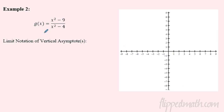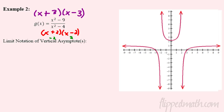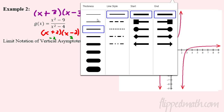Now let's put it all together. To find vertical asymptotes, I need to factor everything. The denominator is a difference of squares, so there's something going on at x = 2 and x = negative 2. On top I've also got a difference of squares — those cancel, so there are no holes. I'm just looking at the bottom: I'll have issues at x = negative 2 and x = 2, so those are my vertical asymptotes.